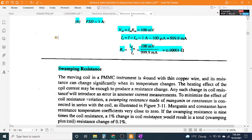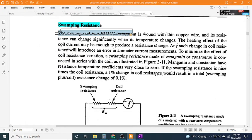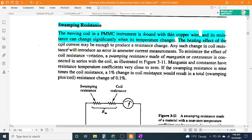Swamping resistance: The moving coil in a PMMC instrument is wound with thin copper wire, and its resistance can change significantly when its temperature changes. The heating effect of the coil current may be enough to produce a resistance change. Any such change in coil resistance will introduce an error in ammeter current measurements.